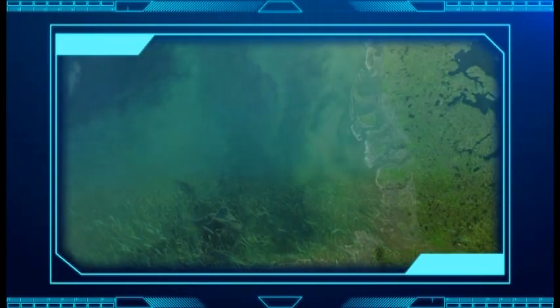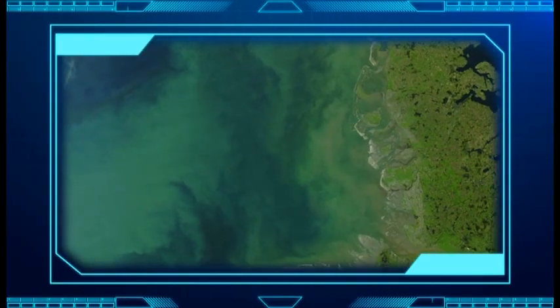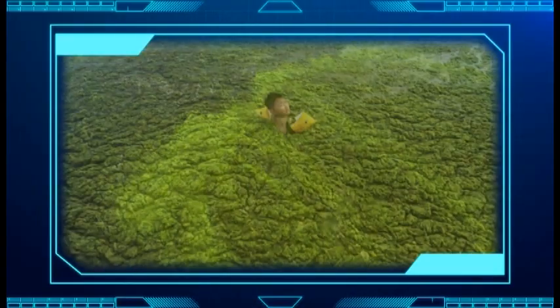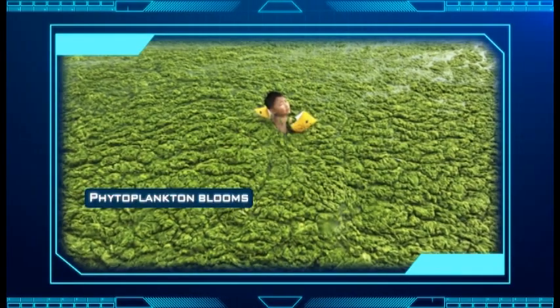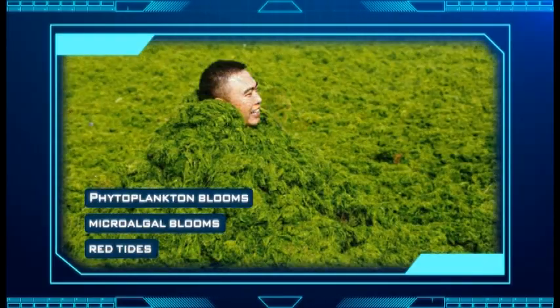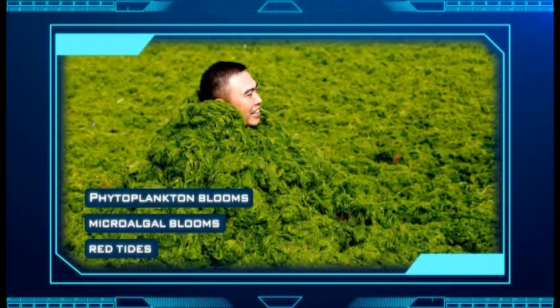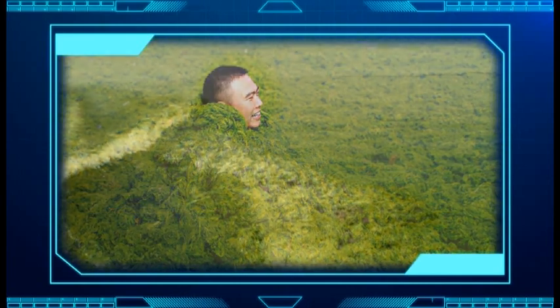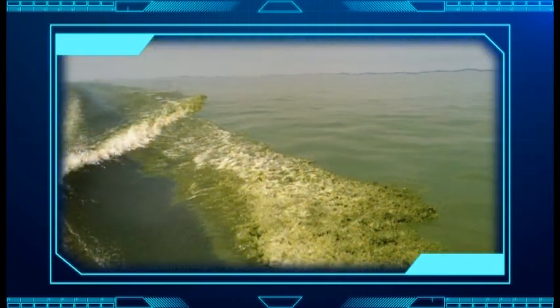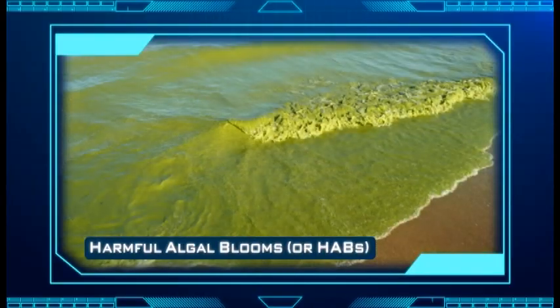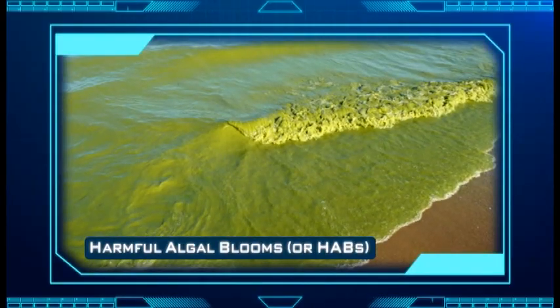However, their roles become much more threatening when they proliferate rapidly or bloom. Phytoplankton blooms, microalgal blooms, or red tides are terms used for this naturally occurring phenomena. The scientific community refers to these events as harmful algal blooms, or HABs.